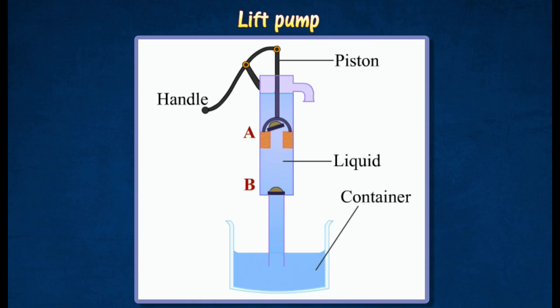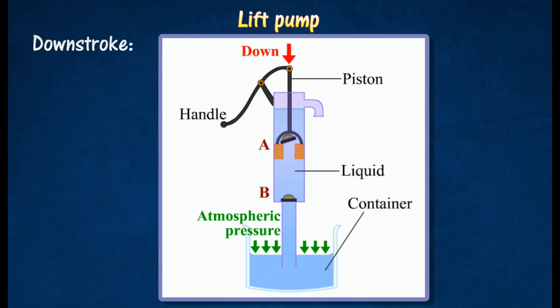Both these valves open upwards. When the piston is pushed downwards, valve B closes and valve A opens to allow air to move out through the piston.